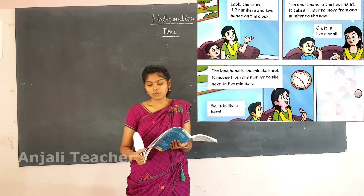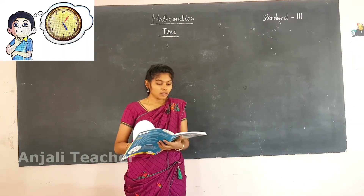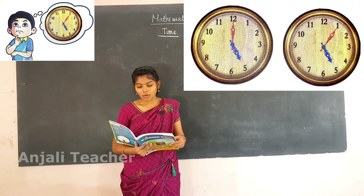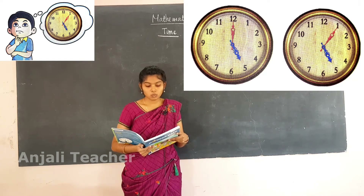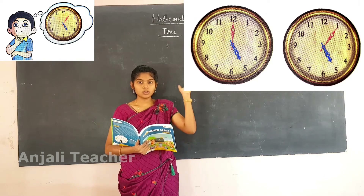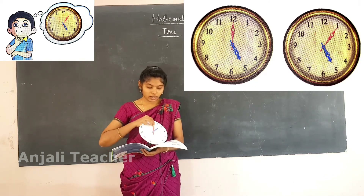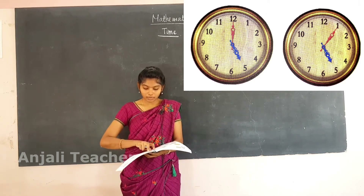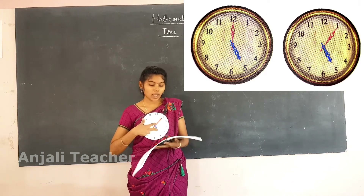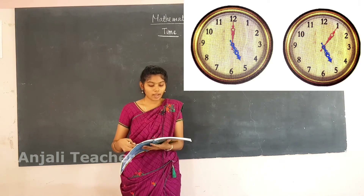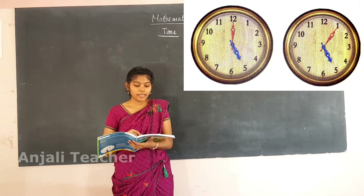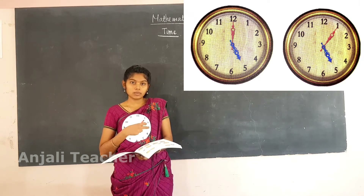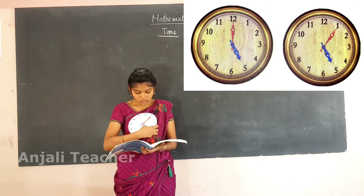Help Tarunjit read the time on the clock at the clinic. The hour hand is a little past 5 and the minute hand has moved from 12 to 1. The long hand is at 1 and the hour hand is just past 5. Since the minute hand takes 5 minutes to move from one number to the next, and it is at 1, it is 5 minutes past 5. The hour hand and minute hand together show the time.